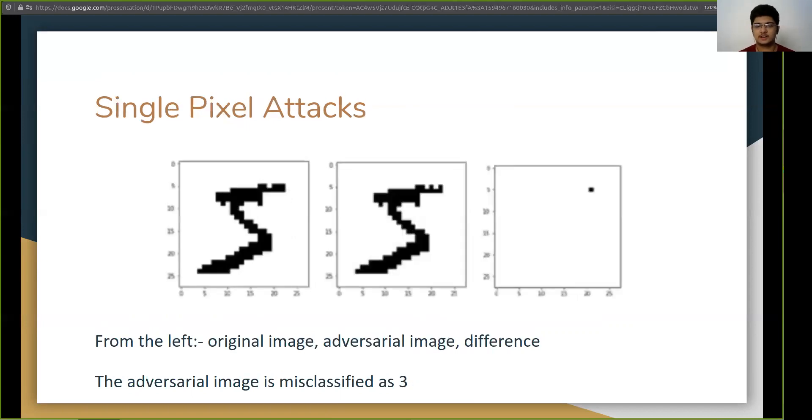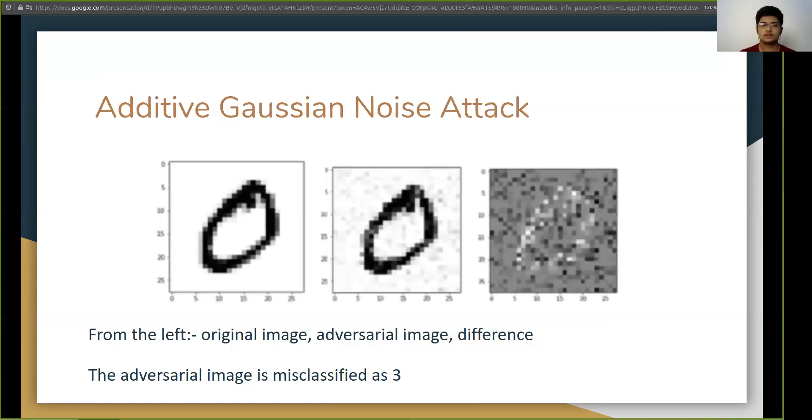Similarly, single pixel attacks change as the name suggests a single pixel and the model is still fooled into believing that the middle image is a three instead of a five. Noise attacks add certain amount of noise to it in a particular property distribution. This is an example of Gaussian noise attack but it can also be uniform distribution and just like the previous examples the middle one is misclassified as three instead of a zero.